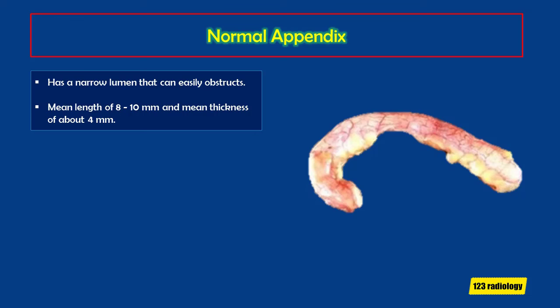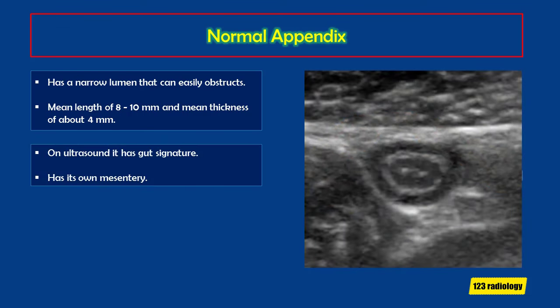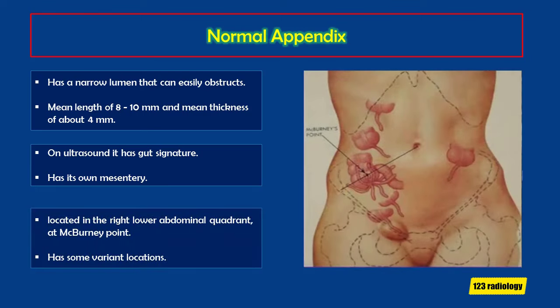The appendix is long and thin, filled with feces and bacteria, with a narrow lumen that easily obstructs. The normal appendix has a mean length of 8 to 10 cm and mean thickness of about 4 mm. On ultrasound it has gut signature — mucosa, submucosa, muscularis propria, and lymphoid tissue — and it even has its own mesentery, which can be visualized especially when inflamed. It is located in the right lower abdominal quadrant at McBurney's point. Variations include the left upper abdomen in malrotation, retrocecal position, and location in the inguinal canal.